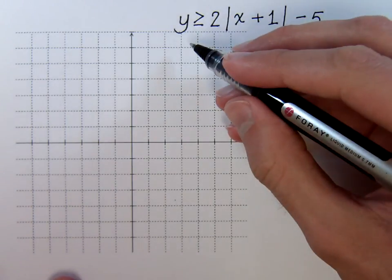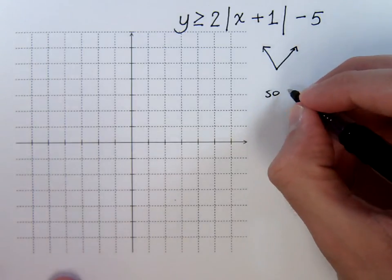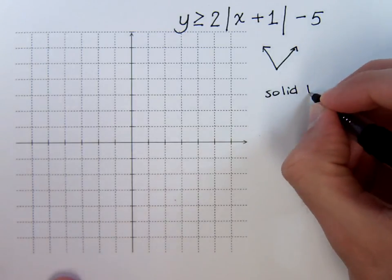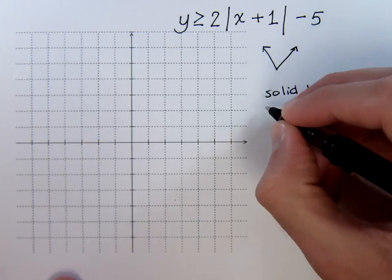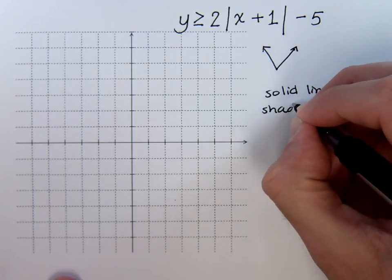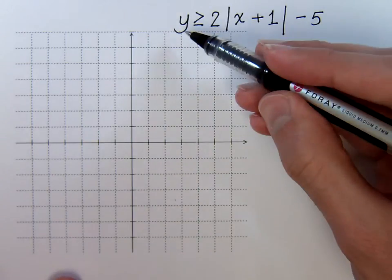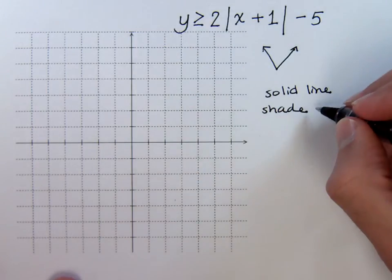Going from the inequality, we know that this should be a solid line, and we should shade where? Since it says y is greater than, that means we're going to be shading above.